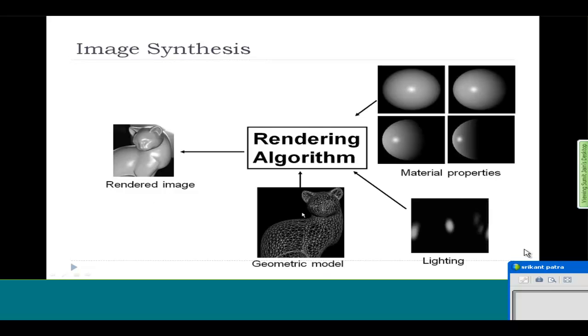As you see, the model consists of certain points and edges. And given these material properties and lighting, you get this kind of an image.